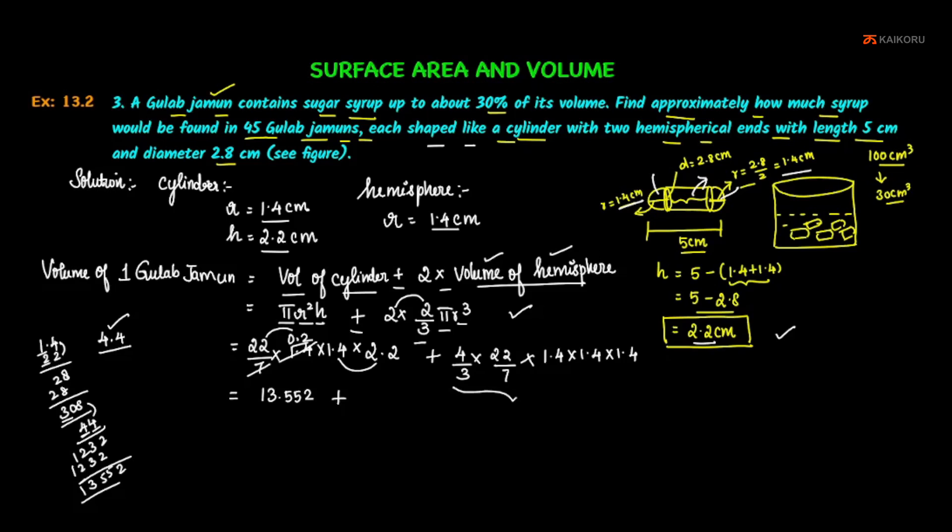Now we simplify the values. 1.4 into 1.4 equals 1.96. 1.96 into 2.2. Dividing by 3, we get 0.392.